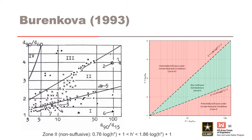Burenkova, in their 1993 paper, proposed a predictive method based on the results of laboratory tests of cohesionless sand gravel soils with maximum particle sizes up to 100 millimeters and coefficients of uniformity up to 200. According to Burenkova, the internal stability of a soil depends on the conditional factors of uniformity, H double prime and H prime. Boundaries were defined separating suffusive soils from non-suffusive soils. Zones 1 and 3 represent zones of suffusive compositions, zone 2 represents non-suffusive compositions, and zone 4 represents a zone of artificial soils.